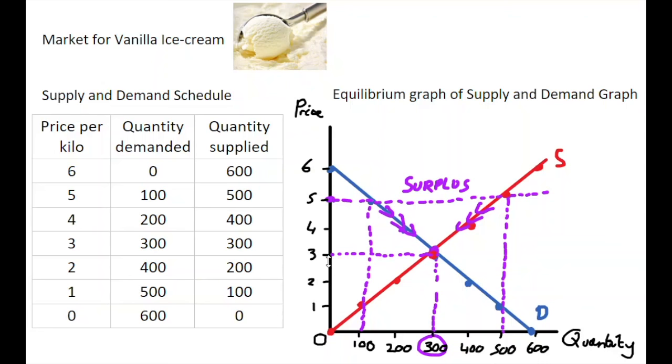So what we have here at three euro is the willingness and ability of people to purchase the product is matched by both the willingness and the ability of firms to actually produce it. So that's a market clearing price, and